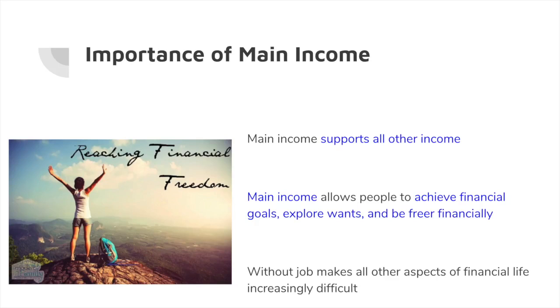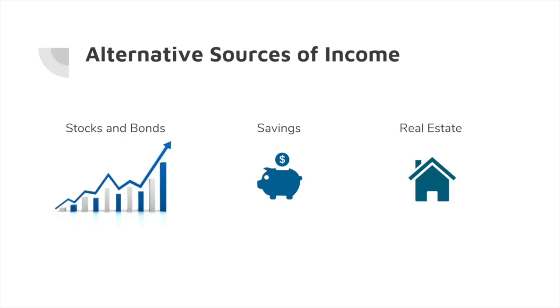Which is why having a job is such an important thing. There are actually alternative sources of income apart from your job. We've broken it down into three simple ones: stocks and bonds, savings, and real estate.